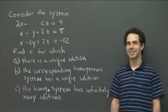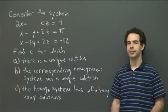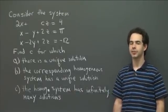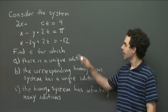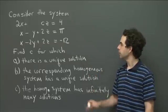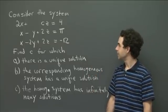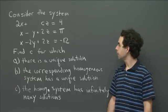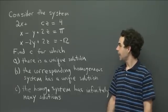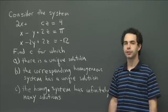Welcome back to recitation. You've been learning in lecture about matrices and their various applications, and one of them is solving systems of linear equations. I have here a system of three linear equations: 2x plus cz equals 4; x minus y plus 2z equals pi; x minus 2y plus 2z equals minus 12.